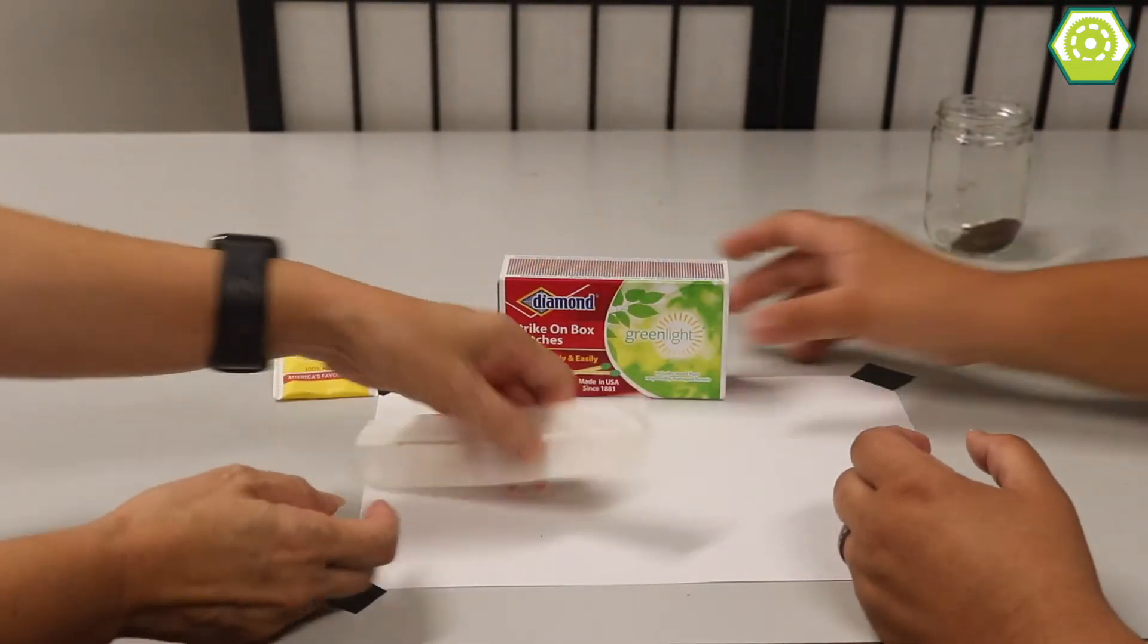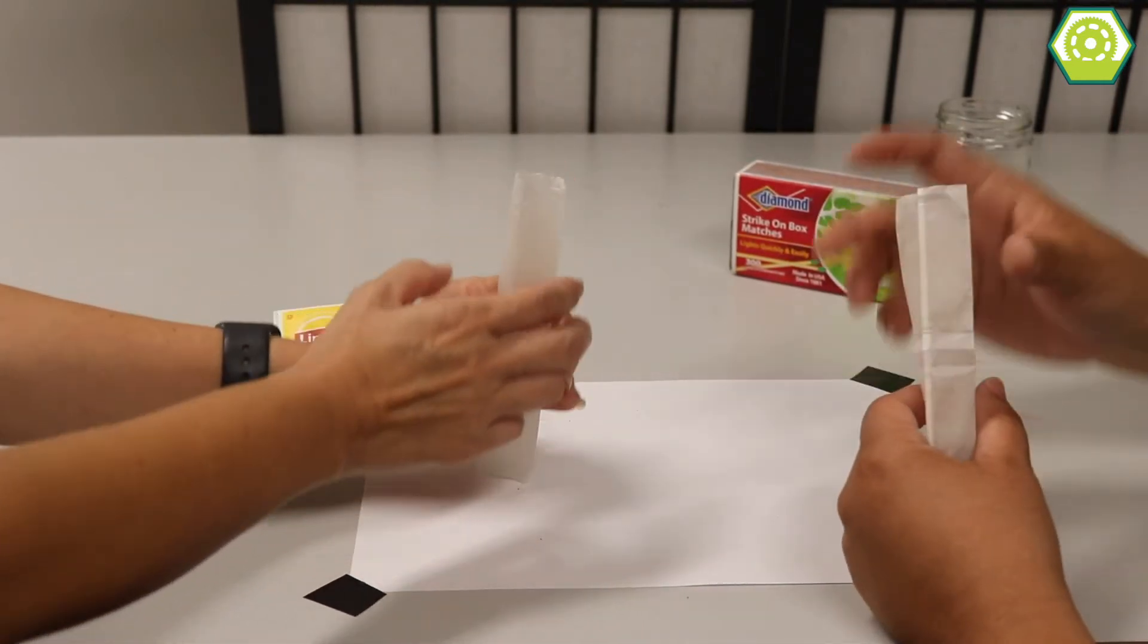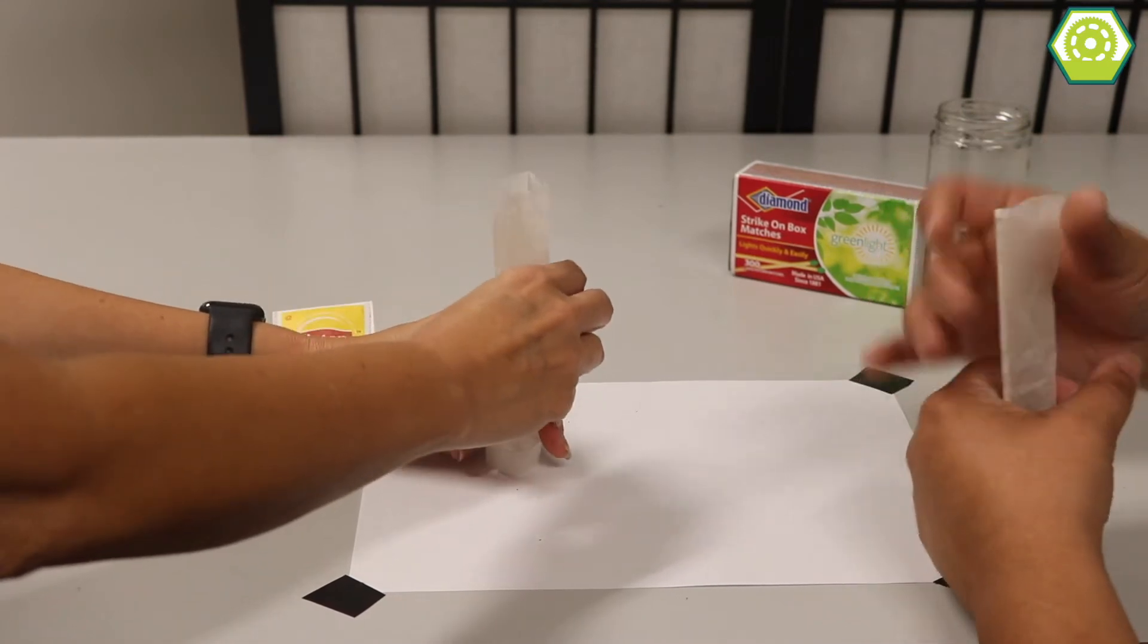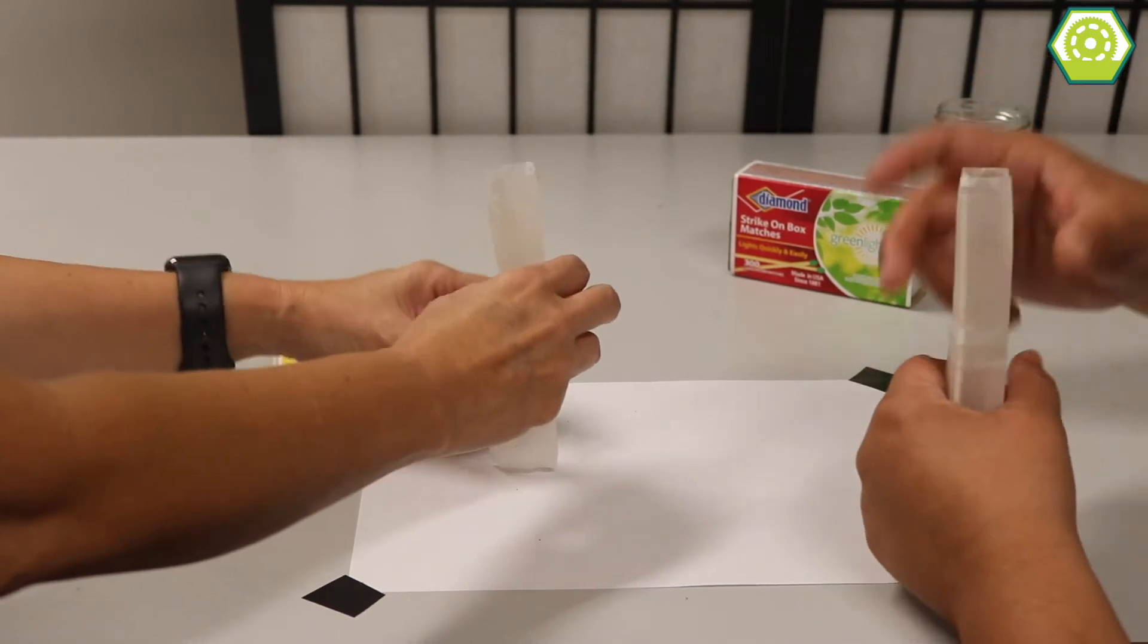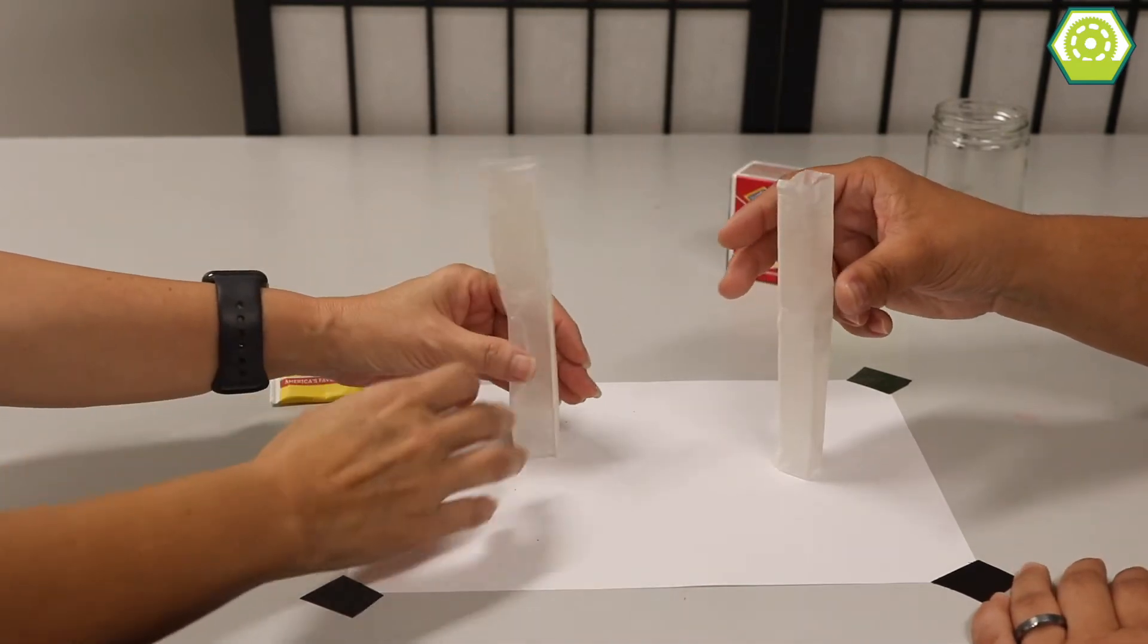So I've got one for Mel. Okay, thank you. And see if you can make that stand up on its end. This is probably the hardest part of this activity, is getting them to stand up correctly. Oh, like that.